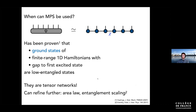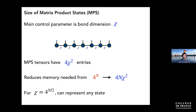A brief question from the audience: when you increase chi to four-to-the-(N/2) you can represent essentially any wave function — can this be proven rigorously? Yes, it can. You can start with small systems where you can do exact diagonalization, take that matrix and decompose it — put it into LAPACK's SVD — and you'll see that all the singular values are significant, with four-to-the-(N/2) of them. It's a very concrete thing.